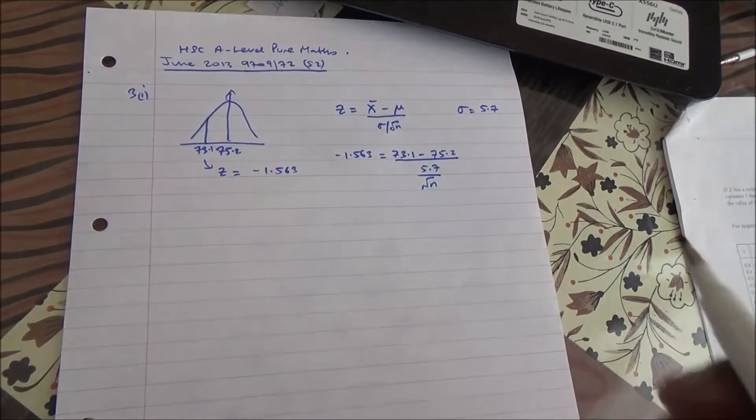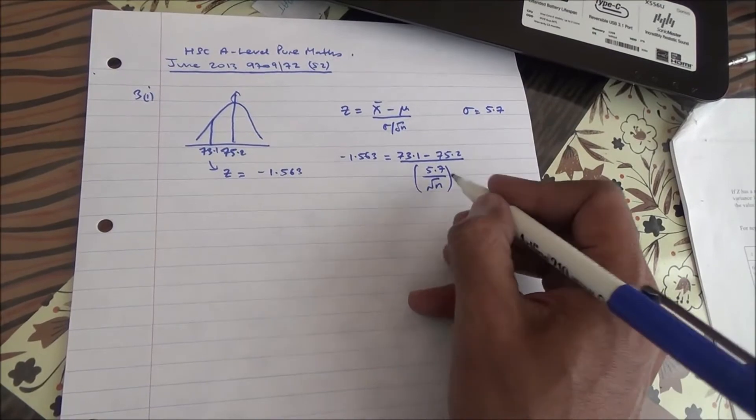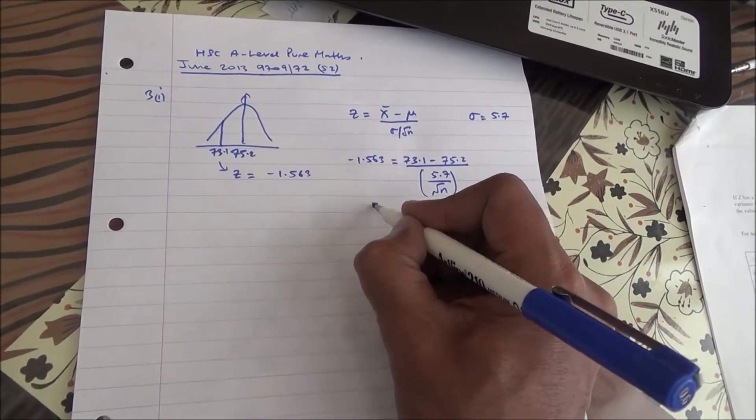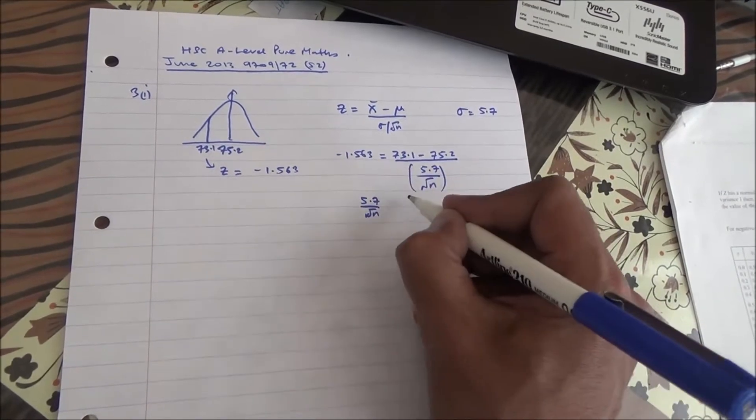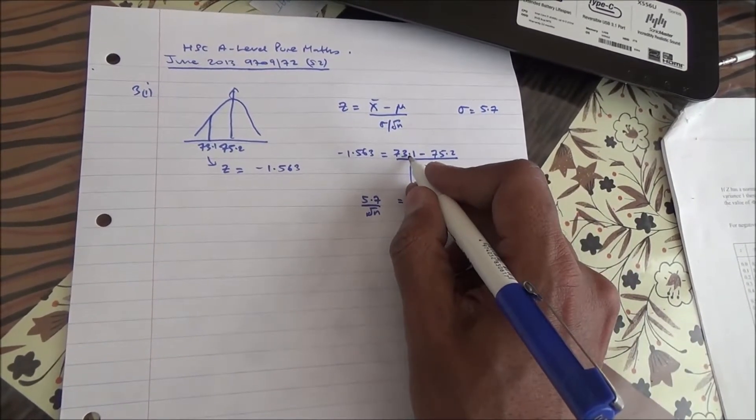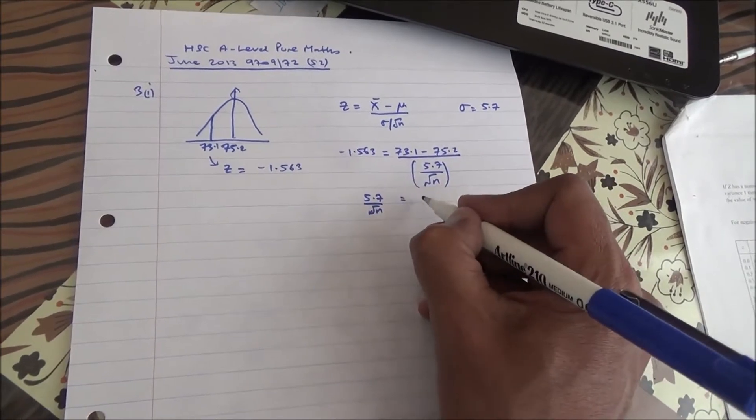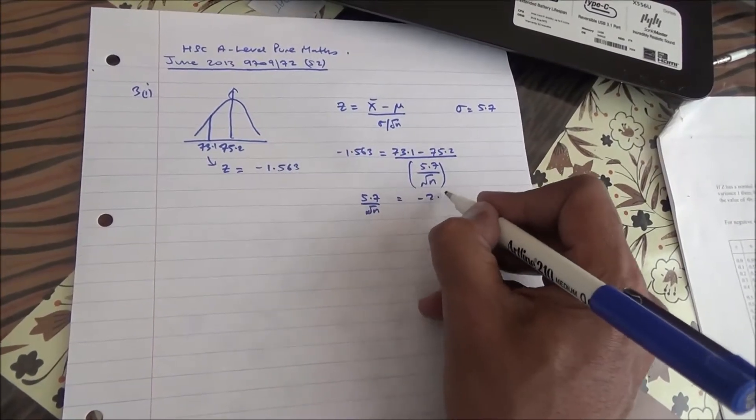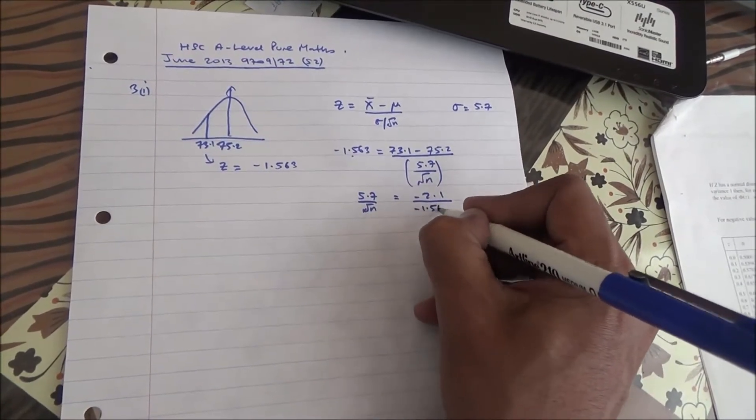Now, from here, it becomes just a matter of algebra. So you have to carry out the calculations. We have then 5.7 over the square root of n. This can come here. And over here, you get 73.1 minus 75.2, which is going to give you minus 2.1 divided by minus 1.563.